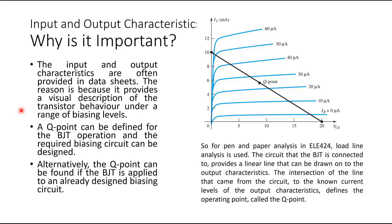For pen-and-paper analysis in ELE 424, you may do load line analysis. The family of curves in the output characteristics represents the transistor, while the circuit connected to the BJT provides a linear load line drawn onto the output characteristics. The intersection of the load line with the appropriate IB curve defines the Q point — the operating point — which gives you the values of VCE and IC.